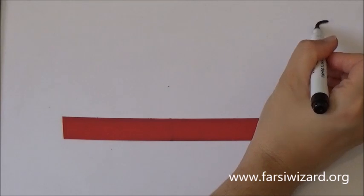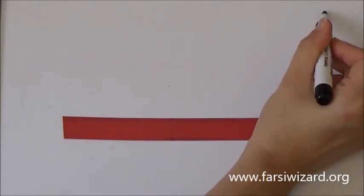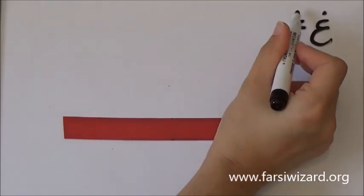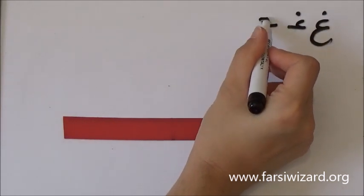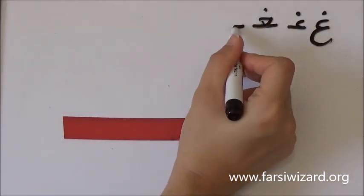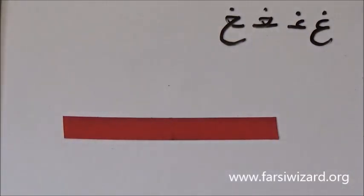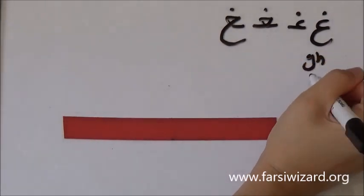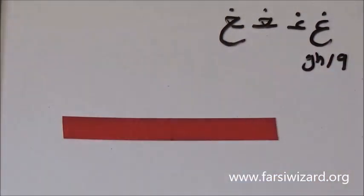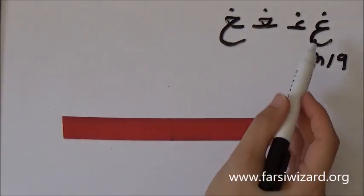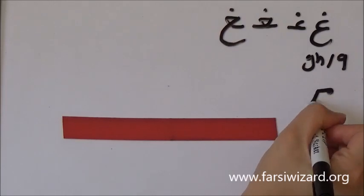Now we're going to move to the next letter. In terms of word formation and how it appears in words, it will be 100% similar to EIN. The only difference is the sound is different and there's one dot on top. This one is GAYN, and the sound is GAYN — basically very similar to the glottal GAYN sound we learned in a previous video.